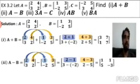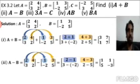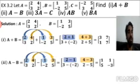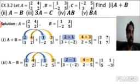Let's work through a problem from exercise 3.2, where A, B, and C are given matrices. We want to find A plus B, A minus B, 3A minus C, AB, and BA. Since A and B are both 2 by 2 matrices, addition and subtraction are possible. For A plus B, corresponding elements add: 2 plus 1 is 3, 4 plus 3 is 7, 3 plus minus 2 is 1, and 2 plus 5 is 7. For A minus B: 2 minus 1 is 1, 4 minus 3 is 1, 3 minus of minus 2 is 5, and 2 minus 5 is minus 3.